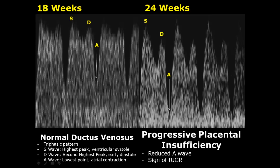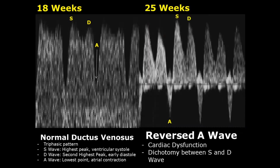A wave reversal is definitely abnormal — here the A wave is seen below the baseline. This is from the same fetus taken at 25 weeks and is a sign of cardiac dysfunction. There is also a dichotomy between the S and D waves, meaning the S and D waves are almost at the same level and closer to each other.